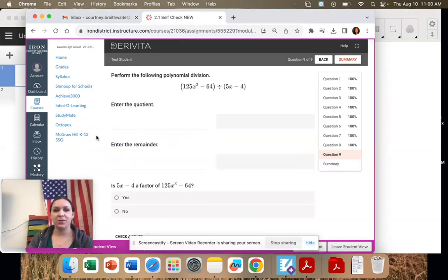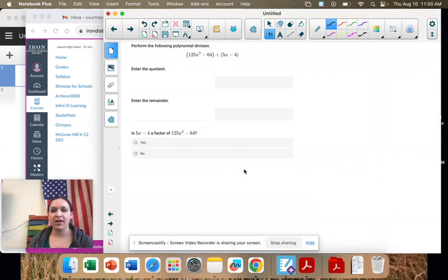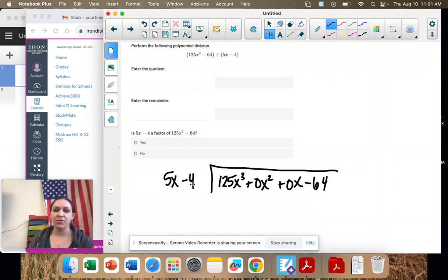Okay, number nine, it's our last one. We're looking at dividing, and you probably see the problem here. We have an x cubed and then 64. So when we divide, we're going to have 125x³, and we have to add in the x², we have to add in the x before we can write the negative 64. And we're dividing by 5x minus 4.